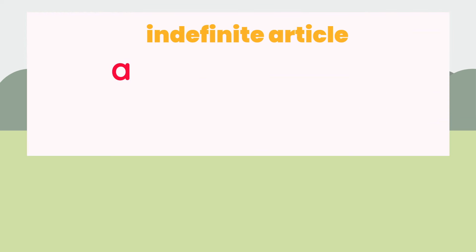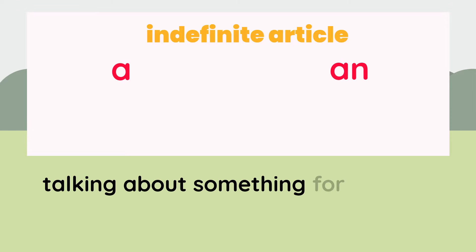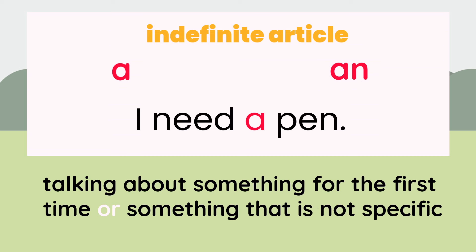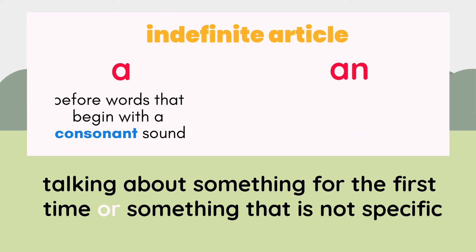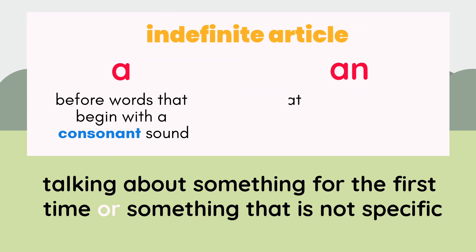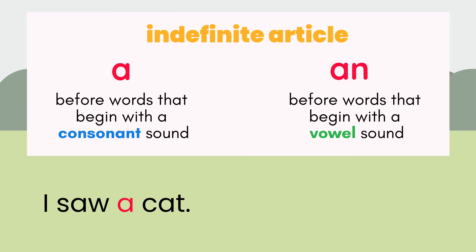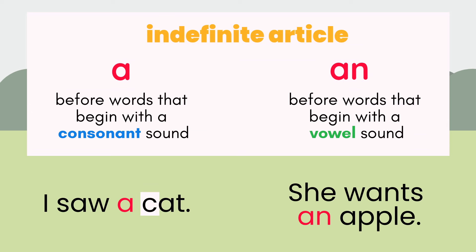Let's start with a and an. Both are used when we're talking about something for the first time or something that is not specific. For example, if I say, I need a pen — a pen could be any pen, not a specific pen. But here's the catch: we use a before words that begin with a consonant sound, and an before words that begin with a vowel sound. For example, I saw a cat — cat starts with a consonant sound, k. She wants an apple — apple starts with a vowel sound, e.